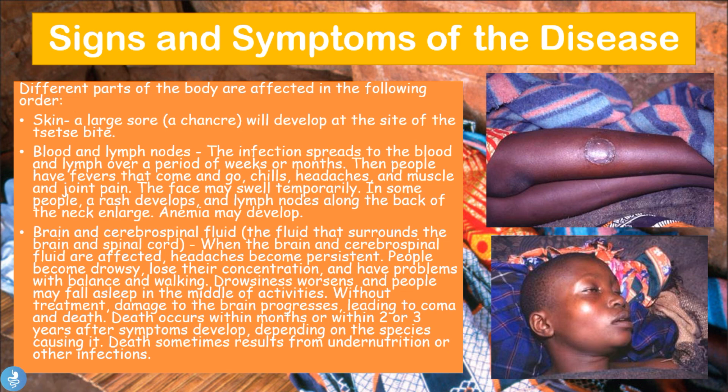The infection then spreads to the blood and lymph over weeks or months. People suffer from fevers that come and go, chills, headaches, muscle and joint pains, and their face may swell temporarily. In some people a rash develops, the lymph nodes along their back and neck enlarge, and in some cases anemia may also develop.